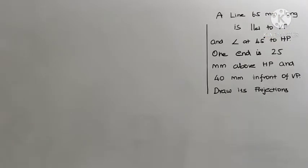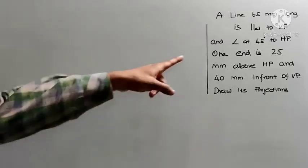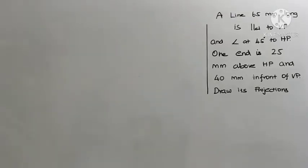Hello. In this video, I am going to solve a problem on projection of straight line. Specifically, a straight line is parallel to one plane and inclined to the other plane. The problem is: a straight line 65mm long is parallel to the vertical plane and inclined at 45 degrees to the horizontal plane.